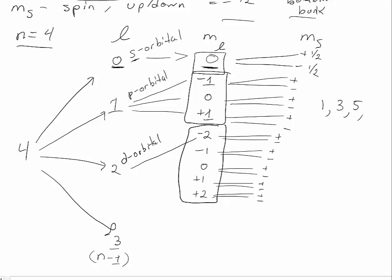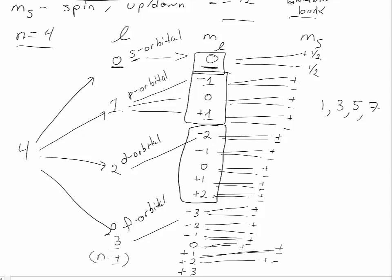How many f orbitals do you think there will be? There will be seven f orbitals, because their values range from negative 3 to positive 3. And again, each of these has two possible spins. Looking at all of the spins in the f orbitals, there are a total of fourteen spots. Does that make sense if there are seven orbitals?